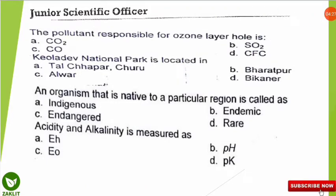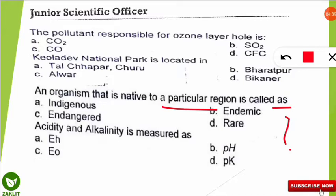The next question: an organism that is native to a particular region is called what? The correct option is that such an organism is called endemic. For example, kangaroos are only present in Australia, so they are endemic to Australia.